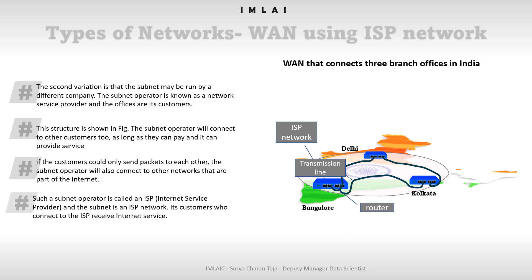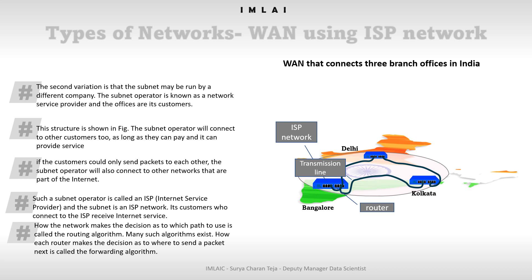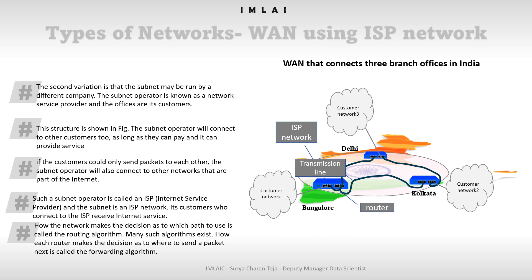The subnet operator will also connect to other networks that are part of the internet. The decision as to which path to use is called the routing algorithm, and many such algorithms exist. How each router makes the decision as to where to send a packet next is called the forwarding algorithm. Based on this routing algorithm and the forwarding algorithm, all routing operations take place.